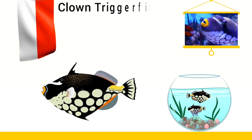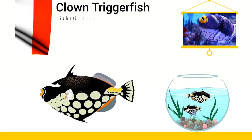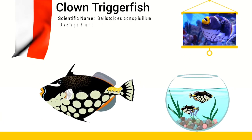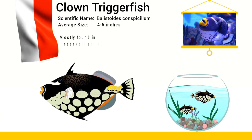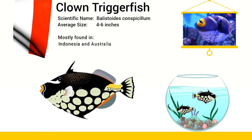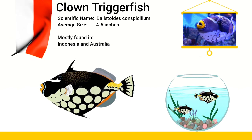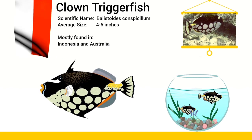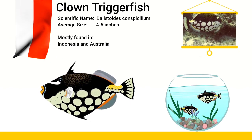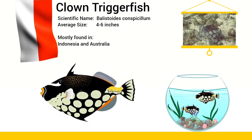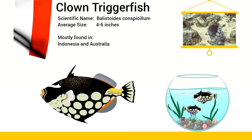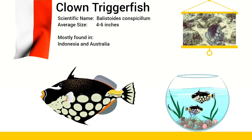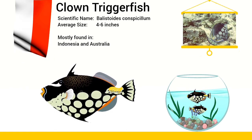The Clown Triggerfish's habitat is concentrated in the Indian Ocean and the West Pacific Ocean. They are mostly found in Australia, Indonesia and Sumatra.